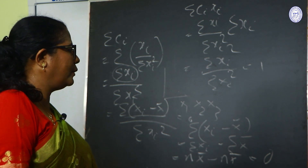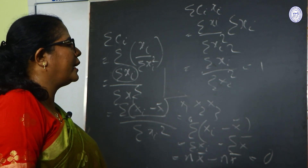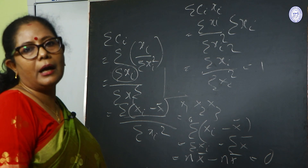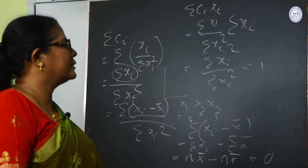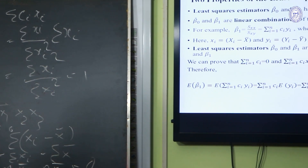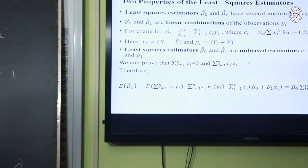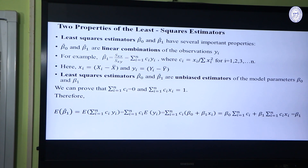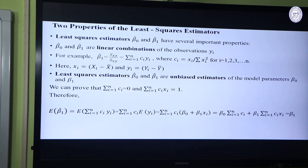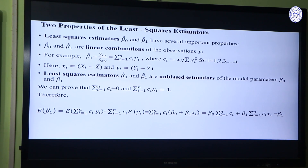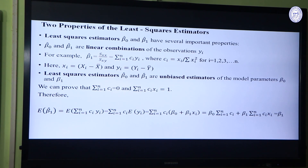We have proved that expected value of beta 1 hat will be equal to beta 1. Now it is your task to prove that expected value of beta 0 hat will be equal to beta 0. Then we will move to the famous Gauss-Markov theorem in the next class. Thank you very much.